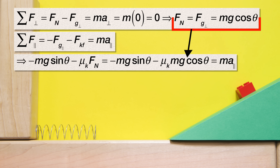And everybody brought mass to the party — mass, mass, mass! Therefore, we can be equitable and take mass from everyone. We get the acceleration parallel equals the negative of the acceleration due to gravity times the sine of the incline angle minus the coefficient of kinetic friction times the acceleration due to gravity times the cosine of the incline angle.